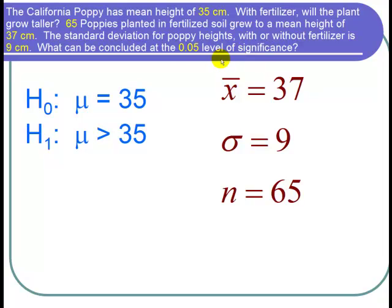So what I want to do is first find out what is the critical Z value that corresponds to a 5% level of significance. Since we have a right tail test, that means the area to the right is 5%. So the area to the left should be 95%.